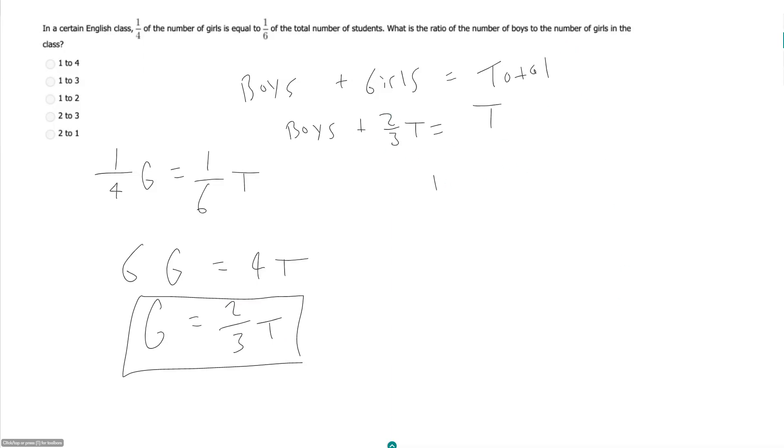And so my boys to girls is going to be one-third T over two-thirds T. T cancels out, and I just got one-third times three over two.